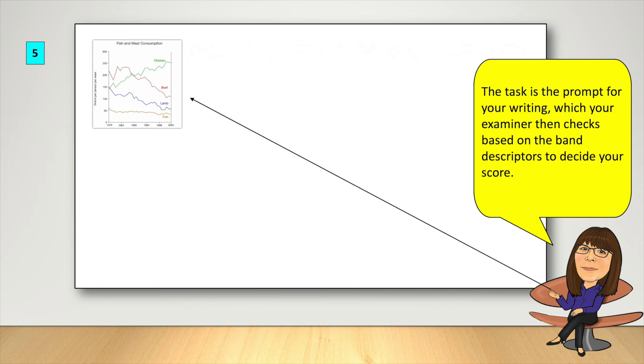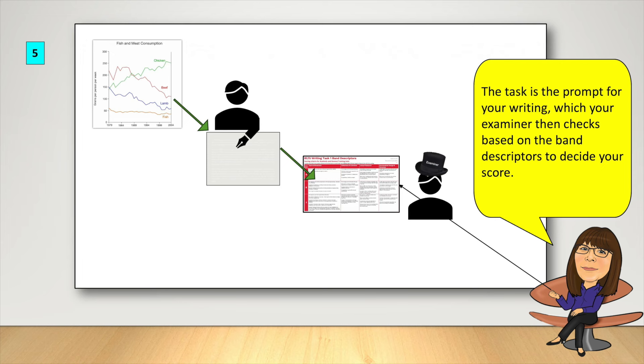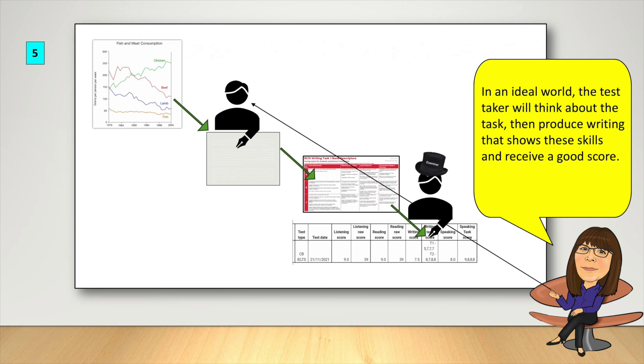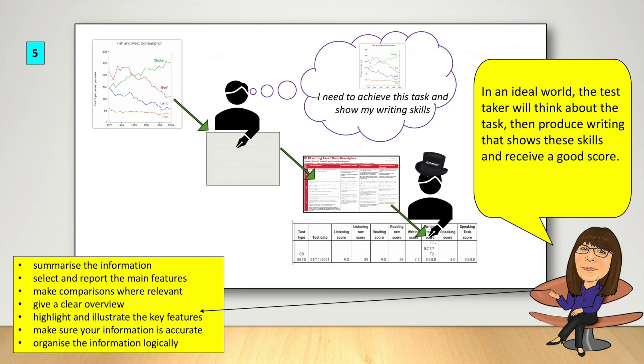The task is the prompt for your writing, which your examiner then checks, based on the band descriptors, to decide your score. In an ideal world, the test taker will think about the task, then produce writing that shows these skills and receive a good score.